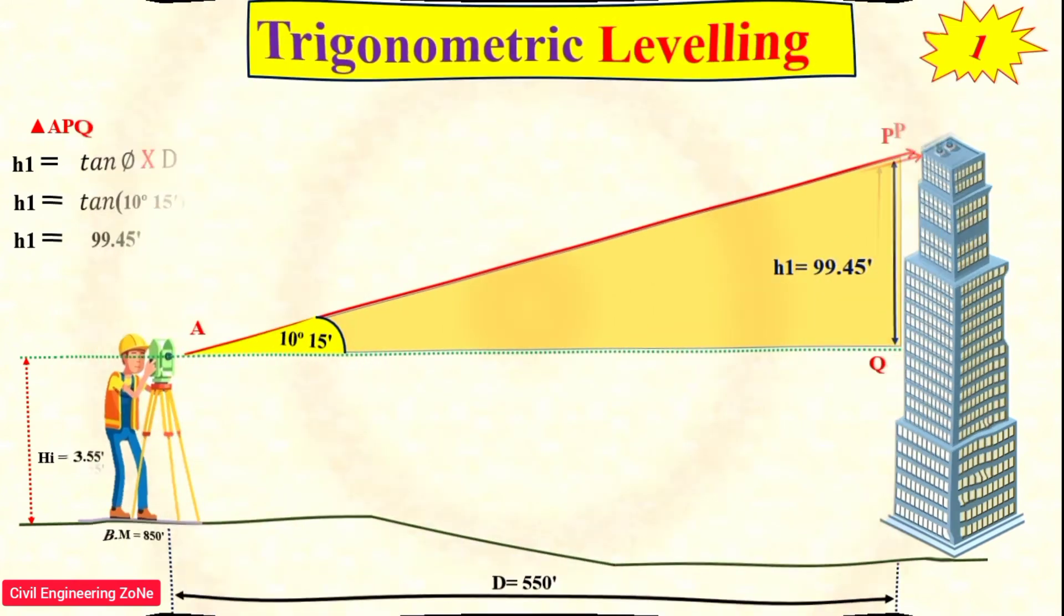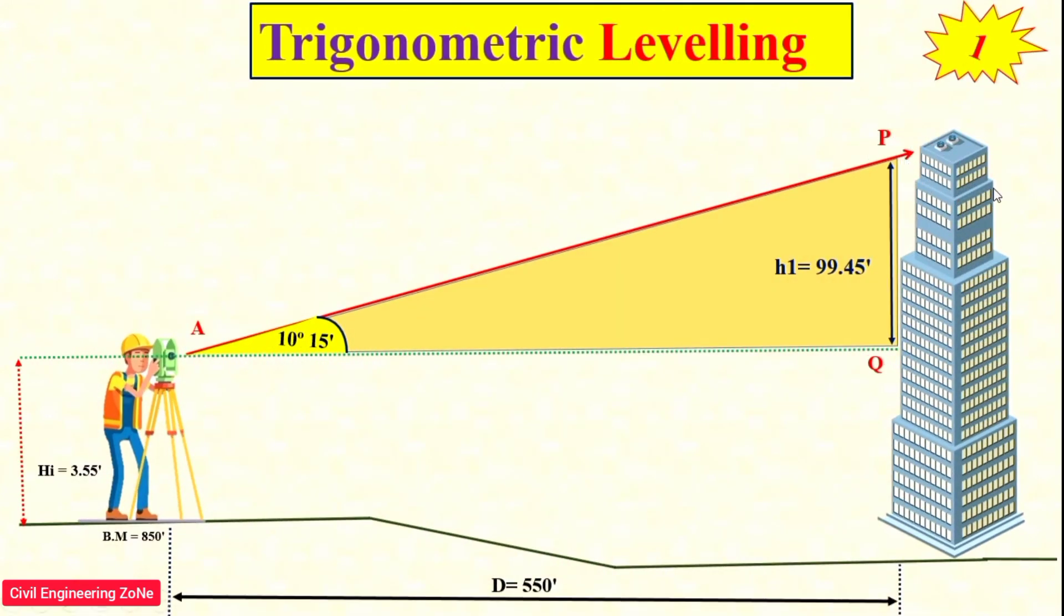Now we can easily calculate the reduced level of the top of the building. Taking the value of benchmark plus Hi, which is the height of the line of collimation, plus the value of h1, we get the reduced level of the top of the building. This is our today's topic. I hope you learned something new from this lecture. If you have any questions related to this topic, please comment on my channel and I will try to reply. See you in the next video. Thanks for watching.